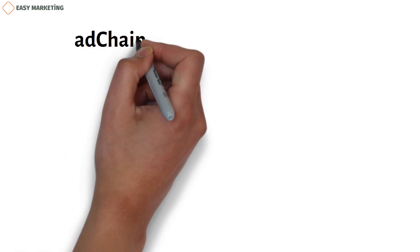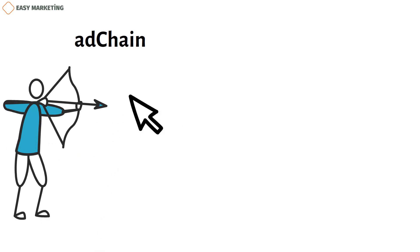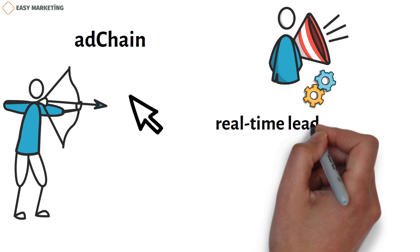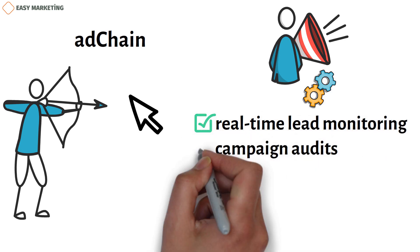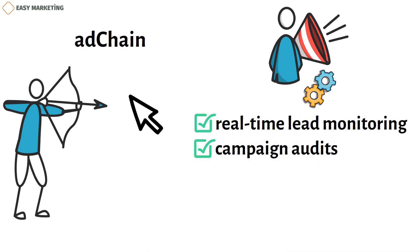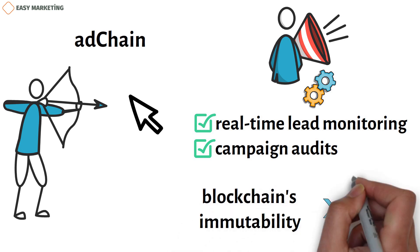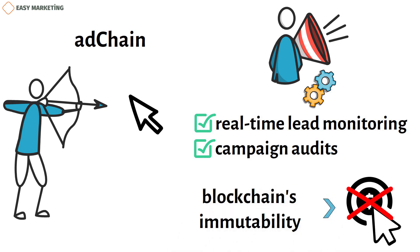The AdChain platform is one of the examples of using blockchain in marketing to combat click fraud. The platform functions as a revolutionary protocol in the realm of marketing technology, providing marketers with cutting-edge features including real-time lead monitoring and campaign audits. The AdChain protocol also makes use of the blockchain's immutability to stop pay-per-click service providers from reaping the rewards of phony traffic and ad clicks.